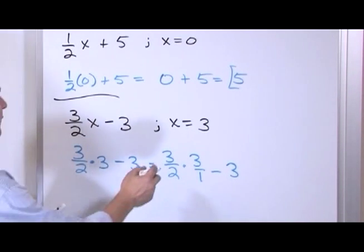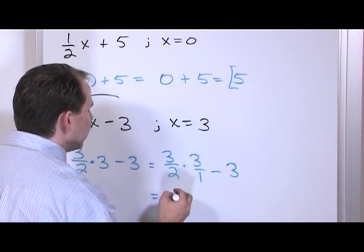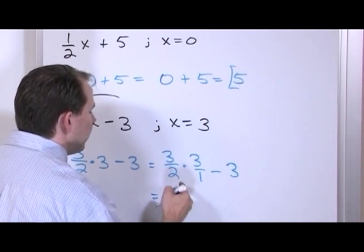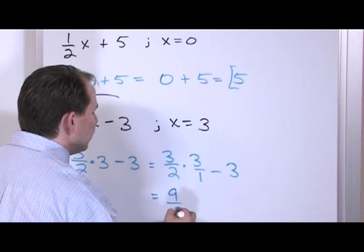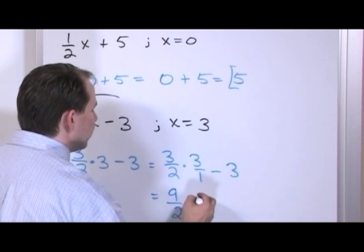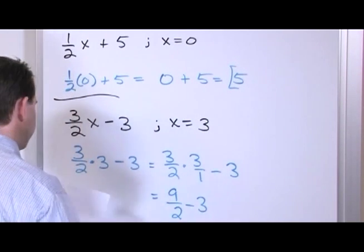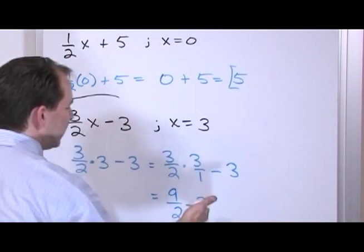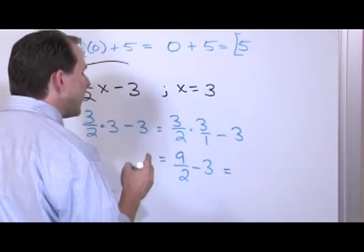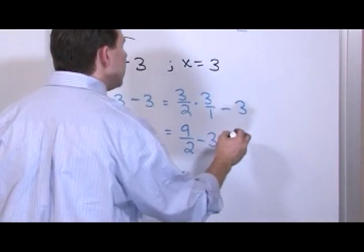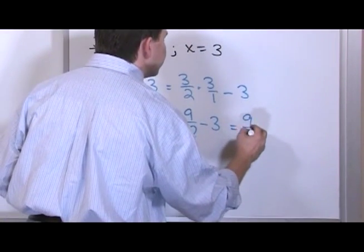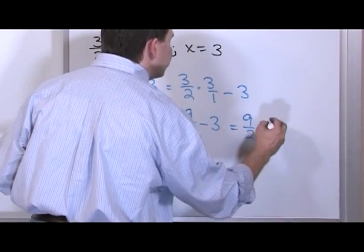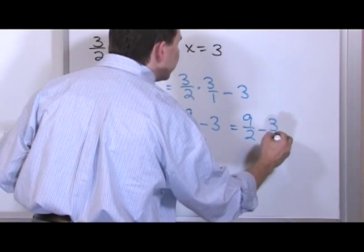Don't forget to keep your minus 3 to keep everything straight. Now you can do this multiplication very easily. 3 times 3 is 9, 2 times 1 is 2, minus 3. So you have 9 halves minus 3. That really is the answer, but you want to try to put it into one fraction if you can. 9 halves minus 3 is just 3 over 1.